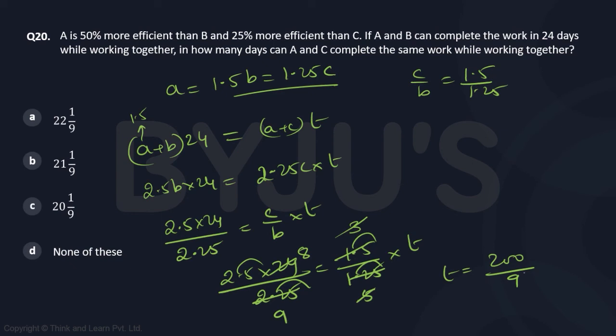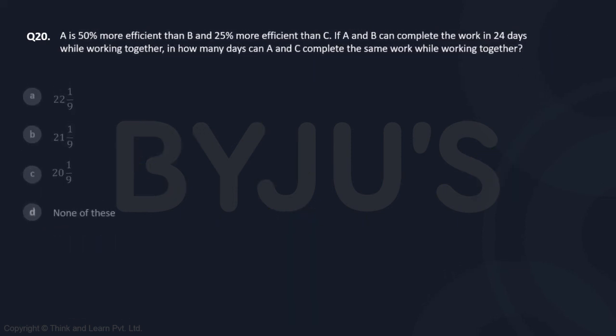18 times 25 is 200. 200 by 9 is 9 twos are 18. So, 2 by 9. So, 22, 2 by 9. Yes, none of the options match. So, the answer is none of these. 22 and 2 by 9 is the correct answer. Thank you.